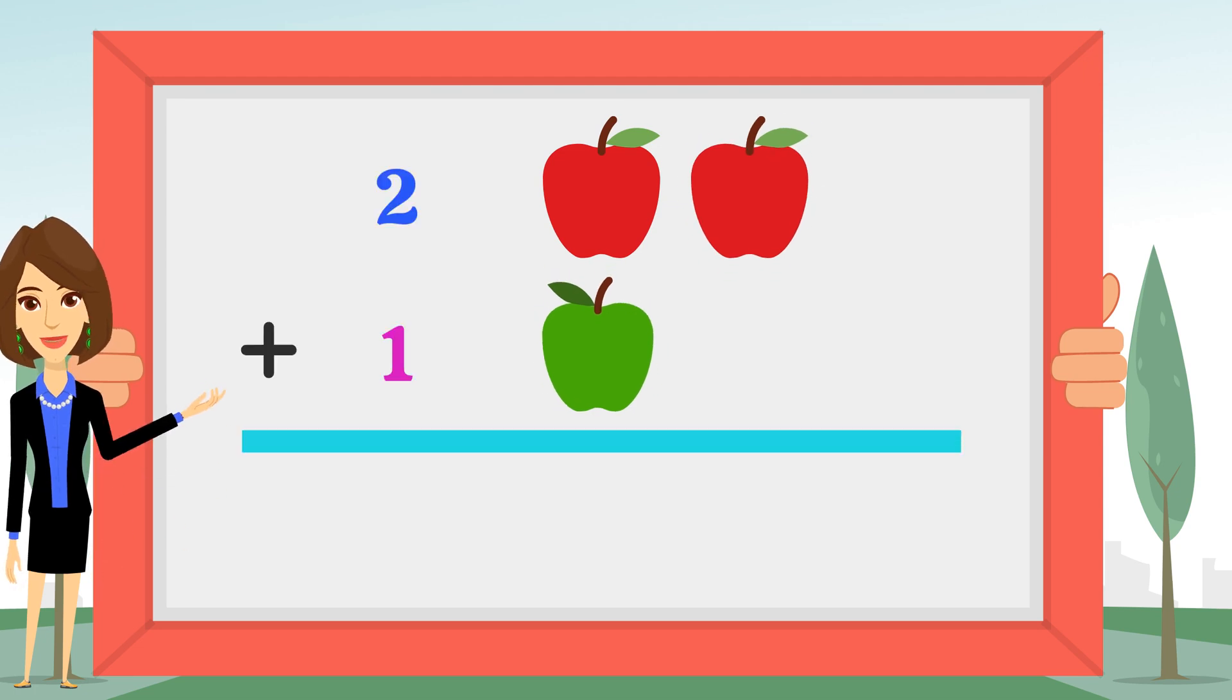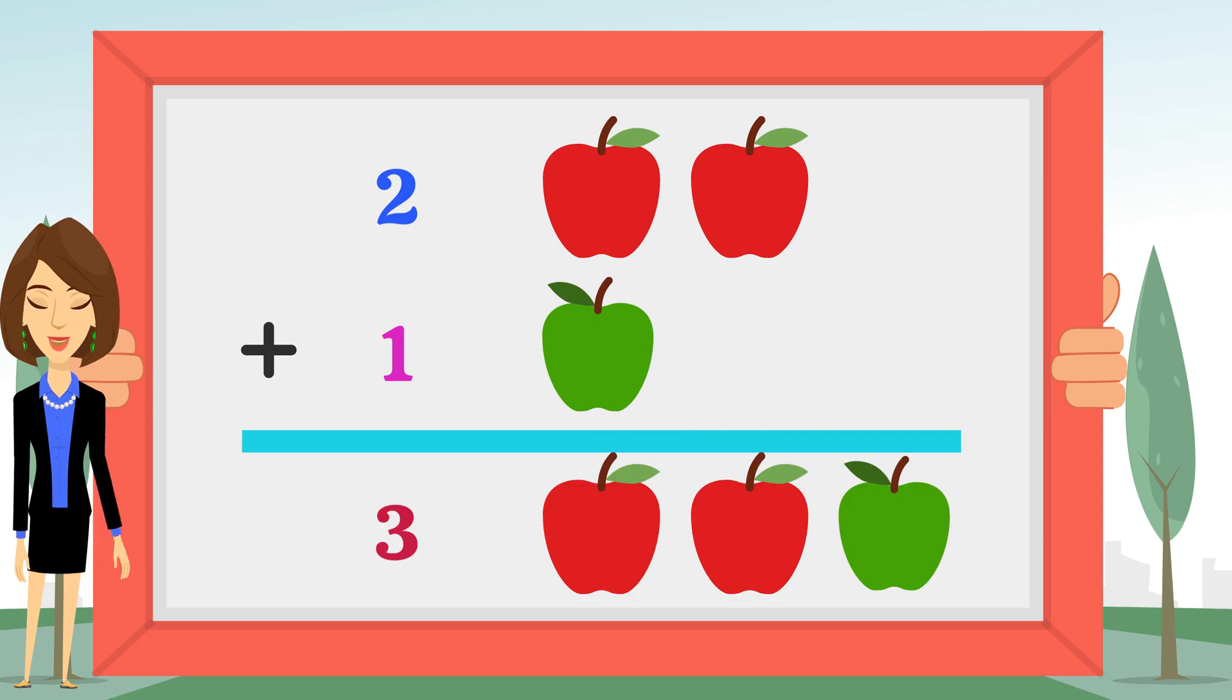So all together they sum one, two, three. There are three apples. Adding up two plus one gives you three.